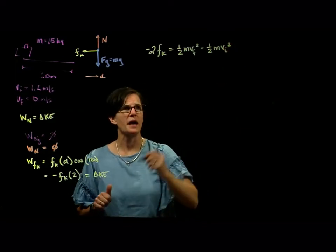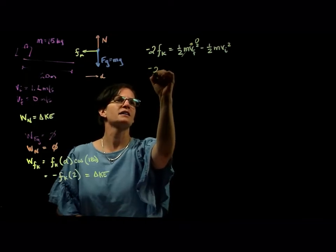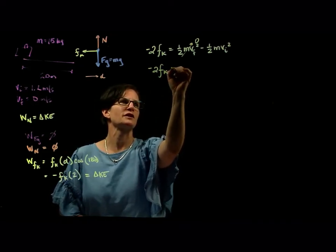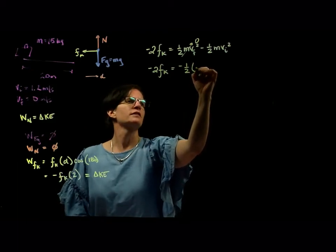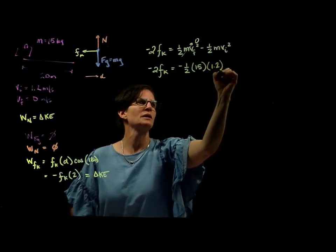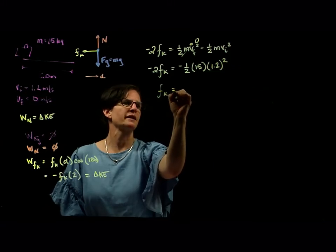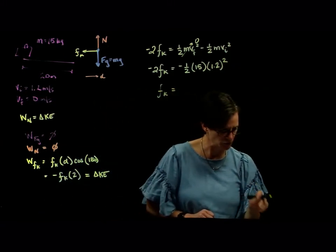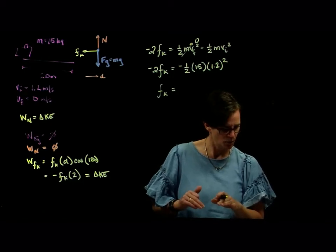We know that that block comes to rest, so v final is zero. We're left with -2 times the force of friction is equal to -1/2 the mass 15 times the initial velocity of 1.2 squared. So our force of friction ends up being equal to 10.8 newtons.